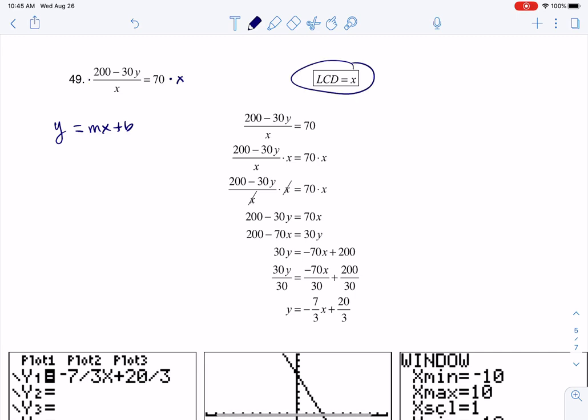So I'm going to multiply this side by x and this side by x and then what happens is these will cancel out and on the left side I'm just going to get 200 minus 3y and on the right side I've got 70x.